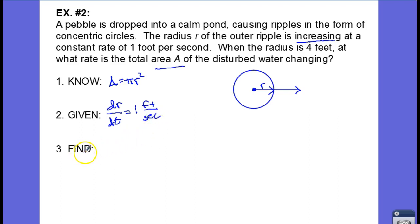And finally, what am I supposed to find? Well, they want to know when the radius is four feet, at what rate is the total area changing? In other words, they want me to find dA dt. They want me to find that. And when do they want to know about this? They want to know when the radius is four feet. So in other words, evaluate this at r equals four feet.